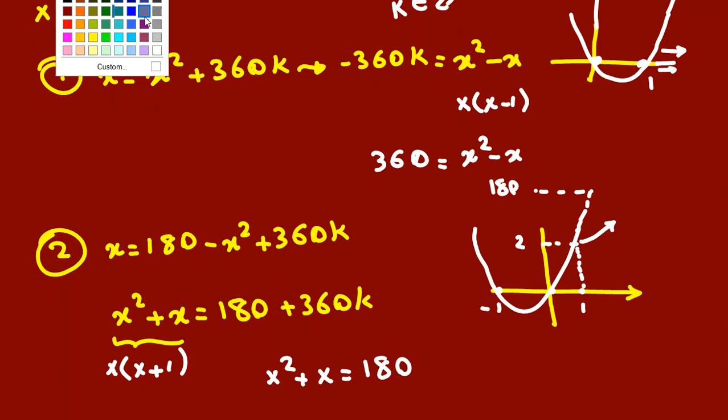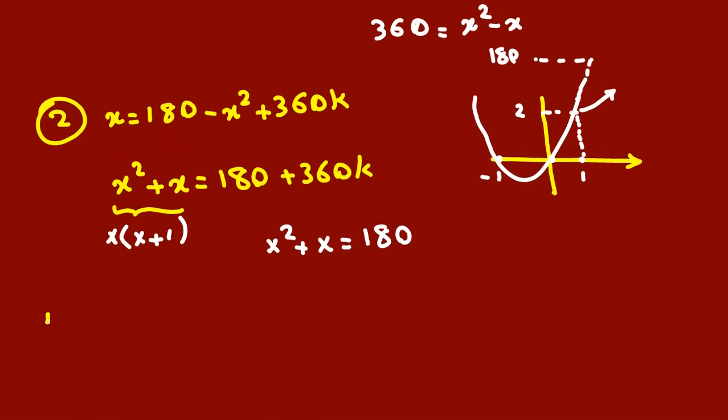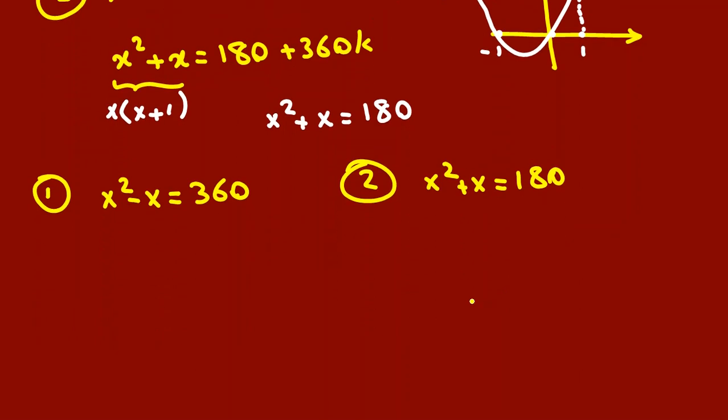From case 1, we found x² minus x equals 360. From case 2, it is x² plus x equals 180. By just checking these two things, you can understand we can reach minimum x here, not the first part.